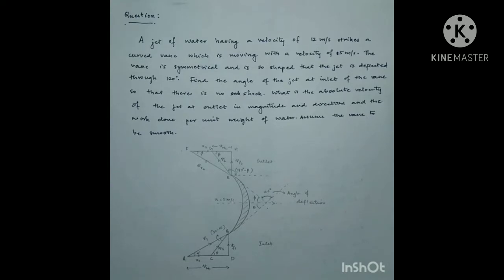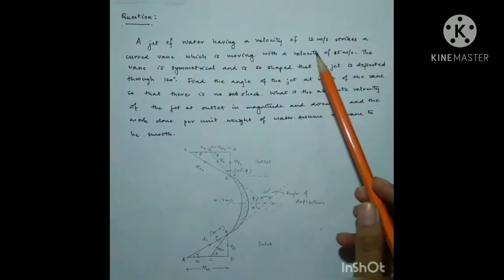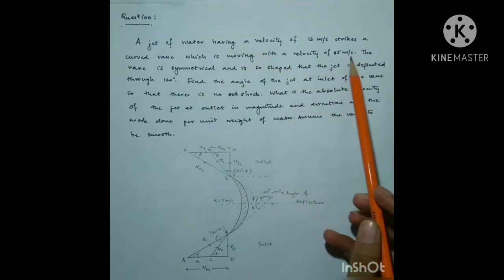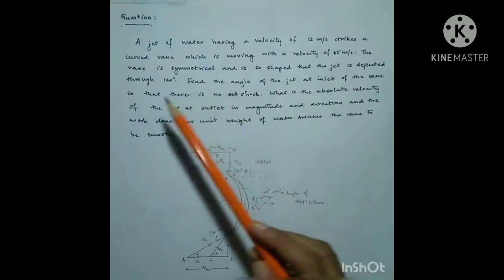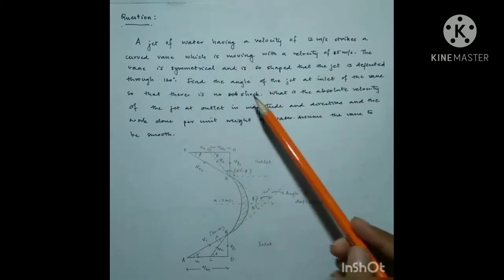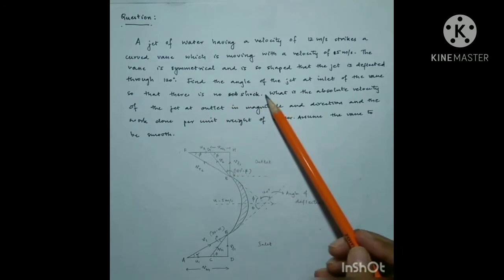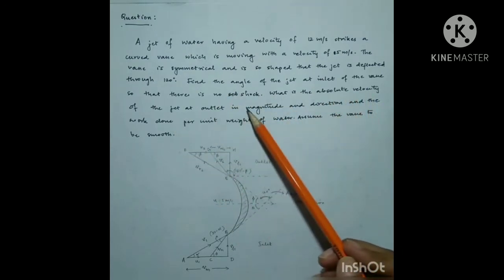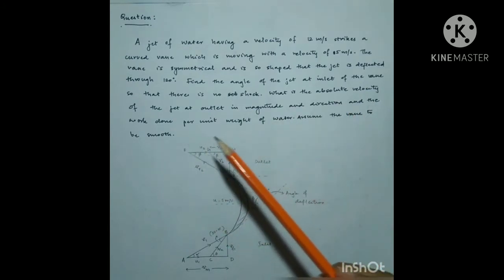Let us first look into the question. A jet of water having a velocity of 12 m/s strikes a curved vane which is moving with a velocity of 5 m/s. The vane is symmetrical and is so shaped that the jet is deflected through 120 degrees. Find the angle of the jet at inlet of the vane so that there is no shock. What is the absolute velocity of the jet at outlet in magnitude and direction, and the work done per unit weight of water? Assume the vane to be smooth.